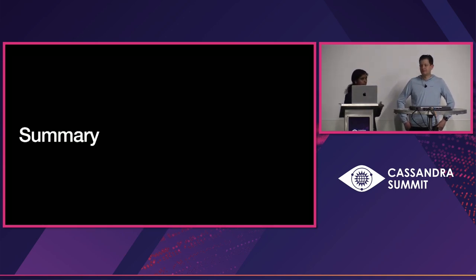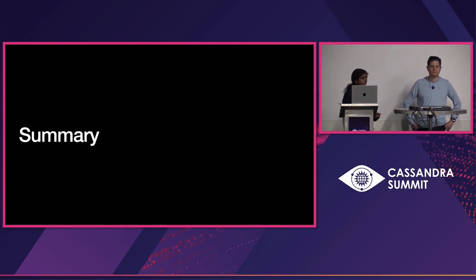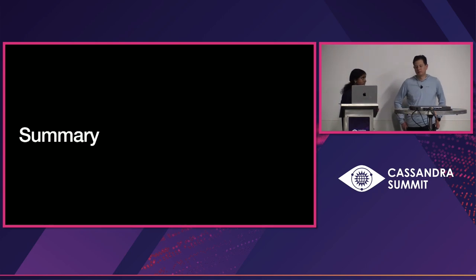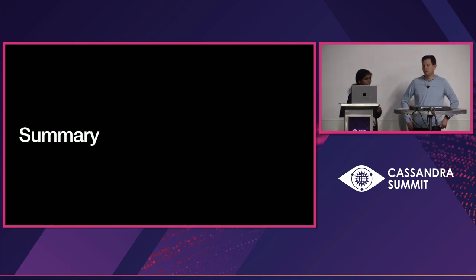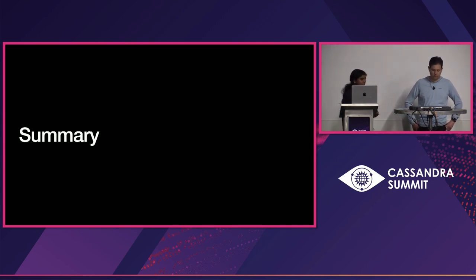In our talk today, we saw what Cassandra Sidecar is and how a Sidecar process acts as an interface between operators and the database. It provides key functionality needed for maintaining the database through REST APIs which are easy to interact with. We also saw Sidecar's pluggable and extensible architecture that can be adapted to support various Cassandra versions, and some of its use cases.